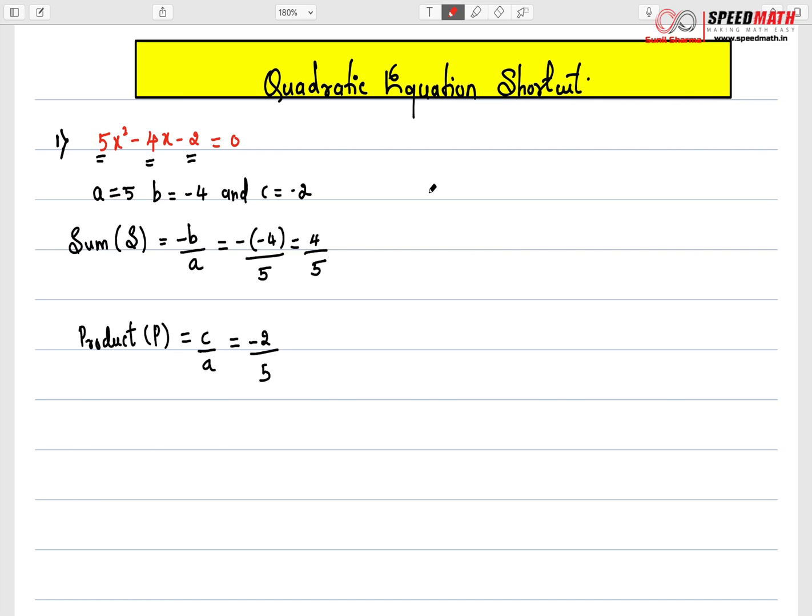Once you have understood sum and product, believe me it is very easy and you can find sum and product very easily. You can say S is -b/a. So b is -4, so -(-4) will give you 4. So 4/5 will be your sum. You can quickly write that down. And then product is c/a which is -2/5. So this particular part, you can do it very quickly in less than 5 seconds.